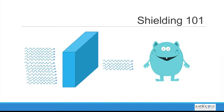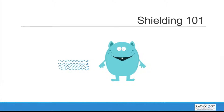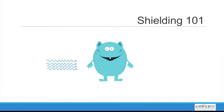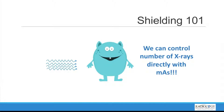However, there's a separate control for this already built into a CT scanner called mAs. The mAs is a relationship of the number of x-rays impacting the patient. So instead of using a shield which decreases the number of x-rays hitting the patient, we can do that directly through the mAs, which also decreases the number of x-rays entering the patient.